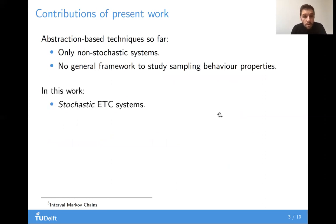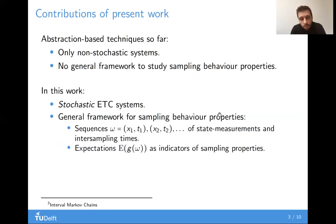In this work, we consider stochastic systems, and we construct a general framework for sampling behavior properties. We consider sequences of state measurements and inter-sampling times, and we argue that expectations of functions of these sequences may act as indicators of sampling properties.